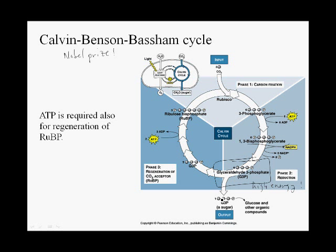In a chloroplast or in a cyanobacterial cell, you can think of many, many copies of Rubisco, all busily fixing carbon dioxide as fast as they can.